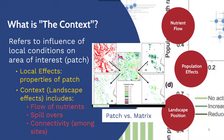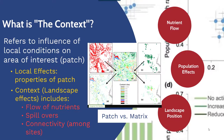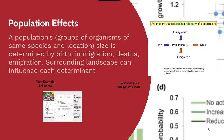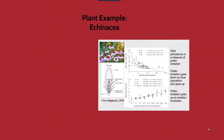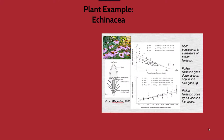We also take a look at population effects when trying to understand the context of a particular region. A population is a group of organisms of the same species found in the same location. Population size is generally determined by birth, immigration, deaths, and emigration, and the surrounding landscape can have a large influence on each of these elements. We can look at an example in plants to demonstrate how the context can influence this process of population size.